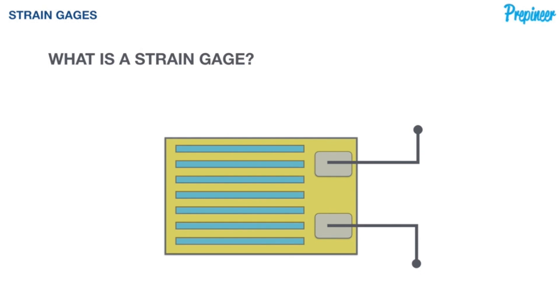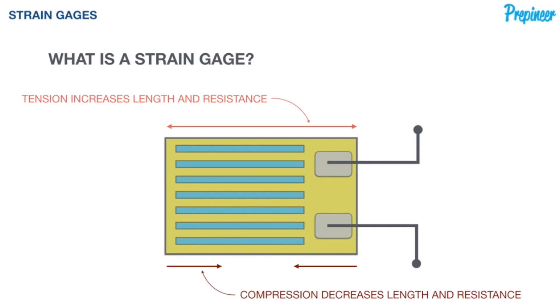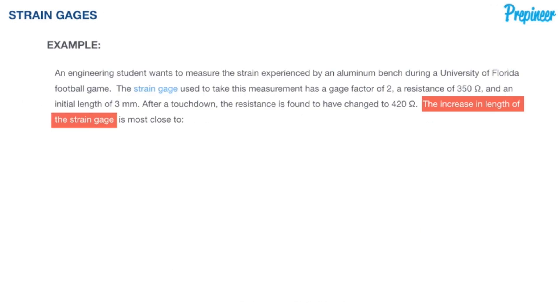Here's a typical illustration of a strain gauge. As you can see those blue lines, horizontal lines are the thin conductive strips. When the strain gauge is in tension, it increases the length and thus increases the resistance. On the other hand, if it's a compression force, it decreases the length and decreases the resistance as well. So that's basically what a strain gauge is.